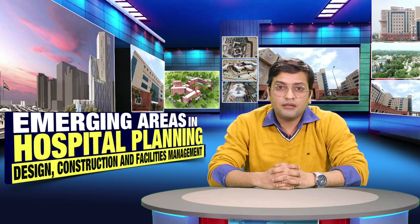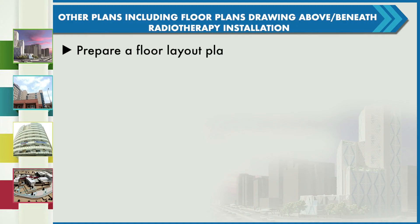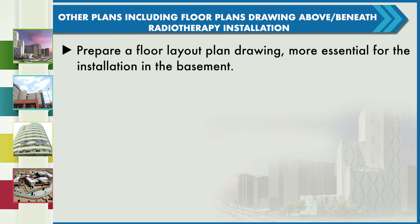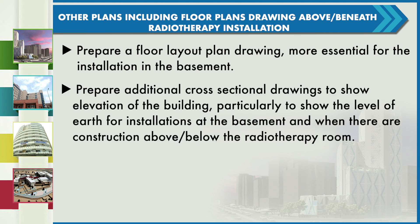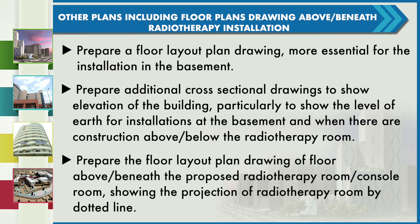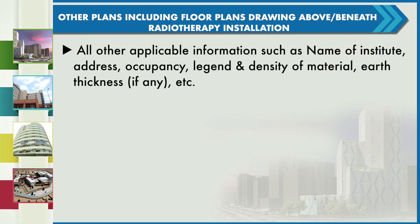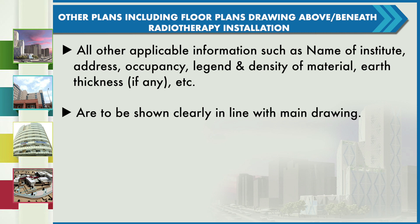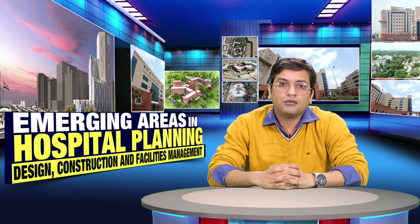For other plans, including floor plan drawings above and beneath the radiotherapy installation — more essential for installations in the basement — we need to prepare additional cross-sectional drawings to show the elevation of the building, particularly to show the level of earth for basement installations. When there are constructions above or below the radiotherapy room, we need to prepare floor layout plan drawings of the floors above and beneath the proposed radiotherapy room and console room, showing the projection of the radiotherapy room by dotted lines. All applicable information such as name of institute, address, occupancy, legend and density of materials, and earth details are to be shown clearly.